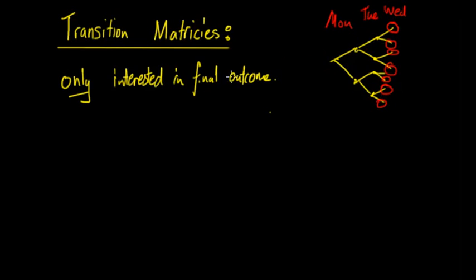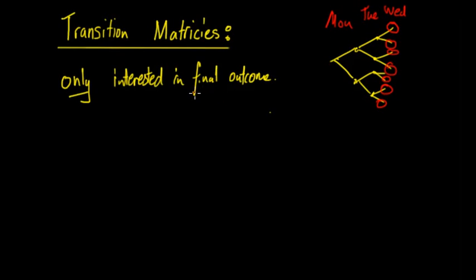then transition matrices would be able to tell you the probability of certain outcomes on Wednesday. But you wouldn't be able to say what's the probability of having two wins and one loss, because that would rely on looking at outcomes that aren't in the final outcome.